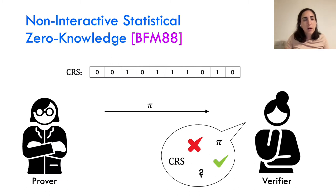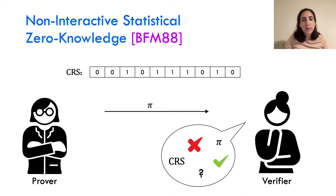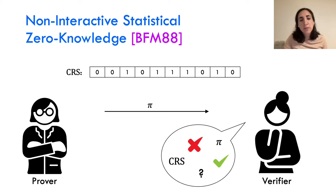Let's recall the non-interactive statistical zero-knowledge model. In this model, we have a CRS — a shared uniform string that both the prover and the verifier receive at the beginning of the protocol. Then the prover, based on this CRS and on the yes instance, generates a proof π and sends it to the verifier. The verifier, based on this proof, the CRS, and the instance, decides whether to accept or reject.